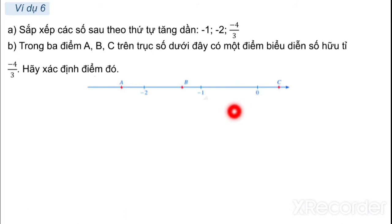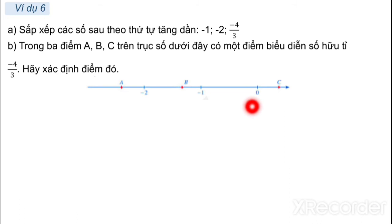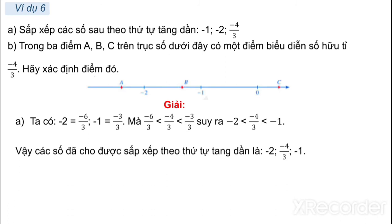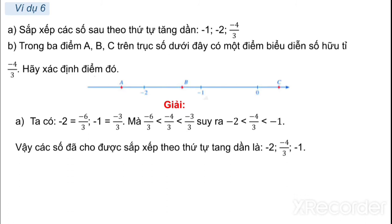Lưu ý: Ta biểu diễn âm 1 ở đây, 0 ở đây, âm 1, âm 2. Biểu diễn âm 4 phần 3: nó sẽ nhỏ hơn âm 1 và lớn hơn âm 2, do vậy điểm B chính là điểm của âm 4 phần 3. Như vậy sắp xếp theo chiều tăng dần: âm 2, âm 4 phần 3, âm 1.